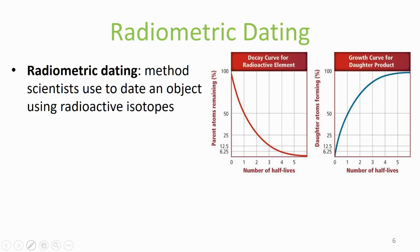Radiometric dating is a method scientists use to date an object using radioactive isotopes. As we can see in this picture, as the number of parent atoms decrease during radioactive decay, the number of daughter atoms increase by the same amount. We can use the ratio of the parent isotope to daughter product in a mineral to determine the amount of time that has passed since the object formed.